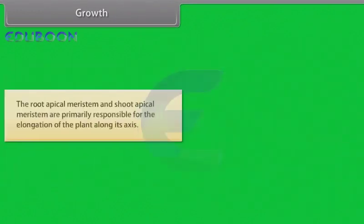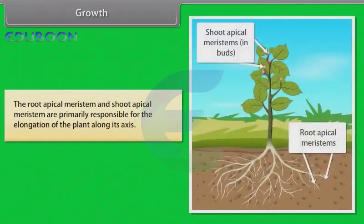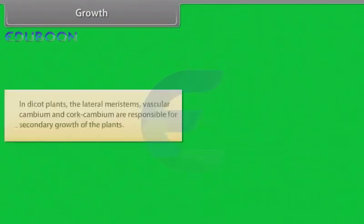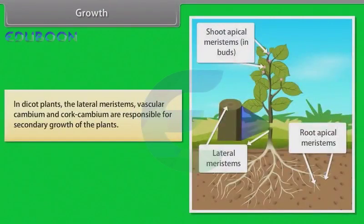The root apical meristem and shoot apical meristem are primarily responsible for the elongation of the plant along its axis. In dicot plants, the lateral meristems — vascular cambium and cork cambium — are responsible for secondary growth of the plants.